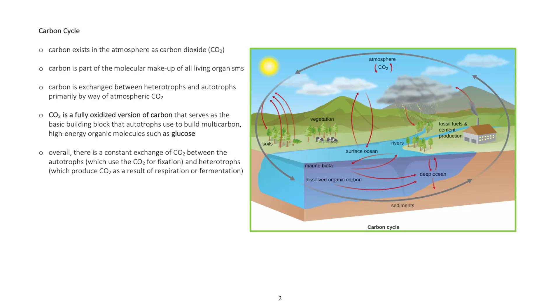Carbon cycle. Carbon exists in the atmosphere as carbon dioxide. Carbon is part of the molecular makeup of all living organisms. Carbon is exchanged between heterotrophs and autotrophs, primarily by way of atmospheric carbon dioxide.